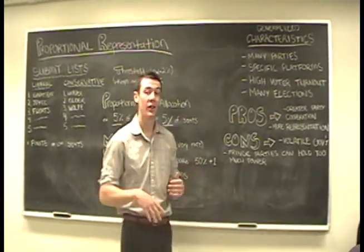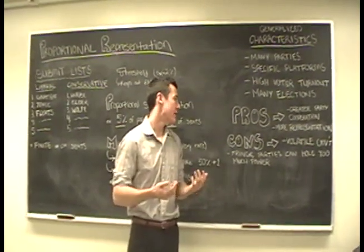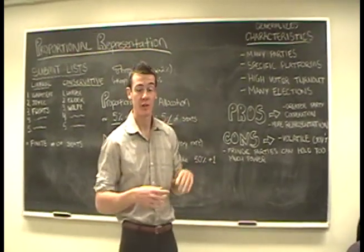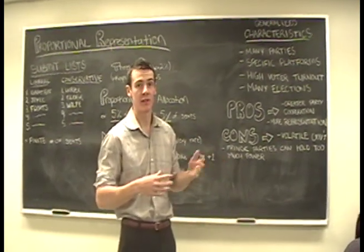Some of the cons, you have a volatile government since there are a lot of elections happening. And fringe parties can hold on too much power. So, you can have tiny parties which have a small amount of electorate support, who have key ministries and wield unproportional amounts of power.